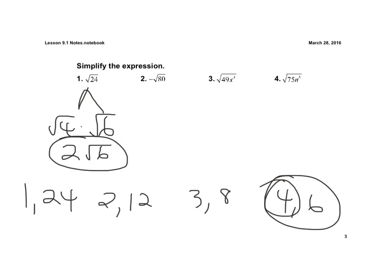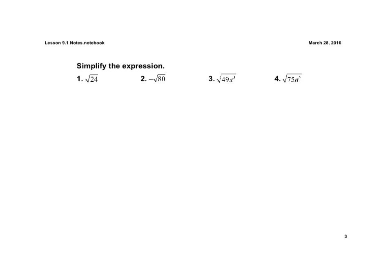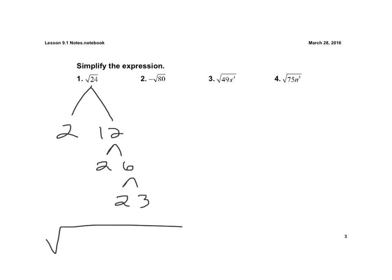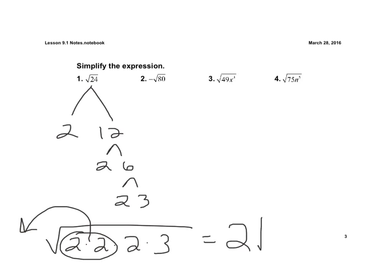The second method, which we'll use most of the time, is the factor tree. For 24: 2 times 12, 2 times 6, 2 times 3 — so 24 is rewritten as a product of its prime factors. Because we're doing a square root, we look for pairs. There's a pair of 2s, and the square root of 2 times 2 is just 2, so we bring one 2 outside the radical. The remaining factors, 2 and 3, stay under the radical as 6, giving us 2 times the square root of 6.